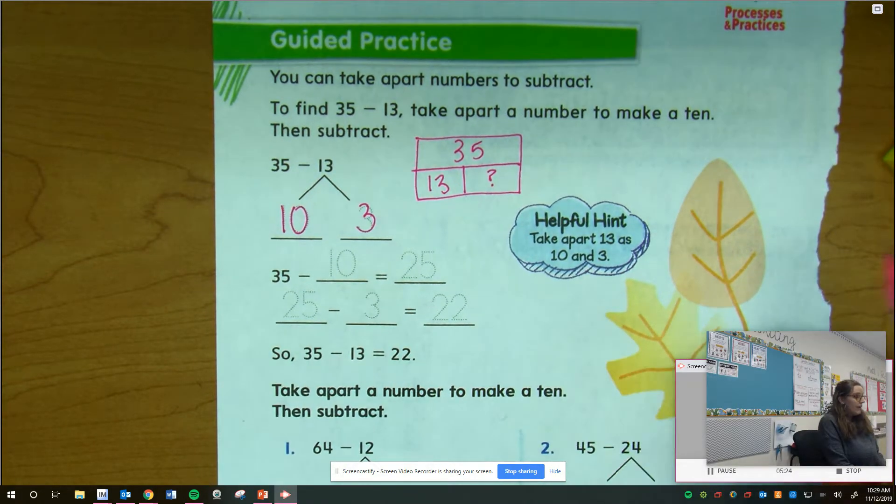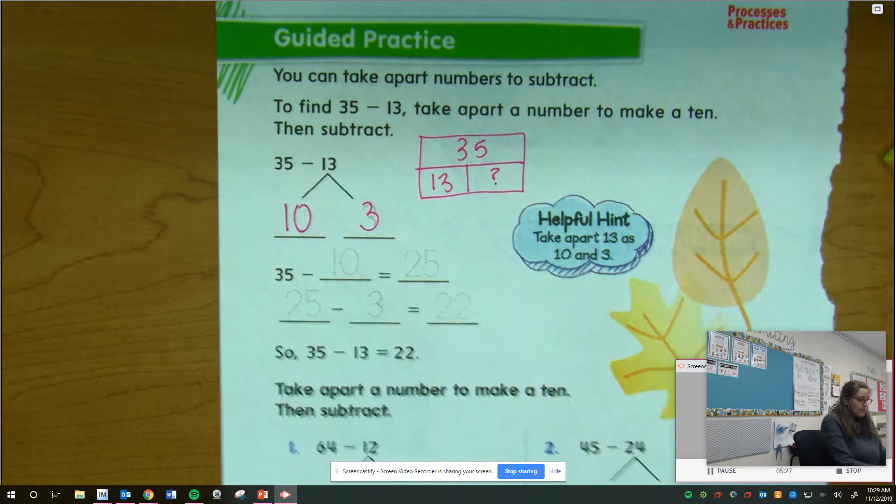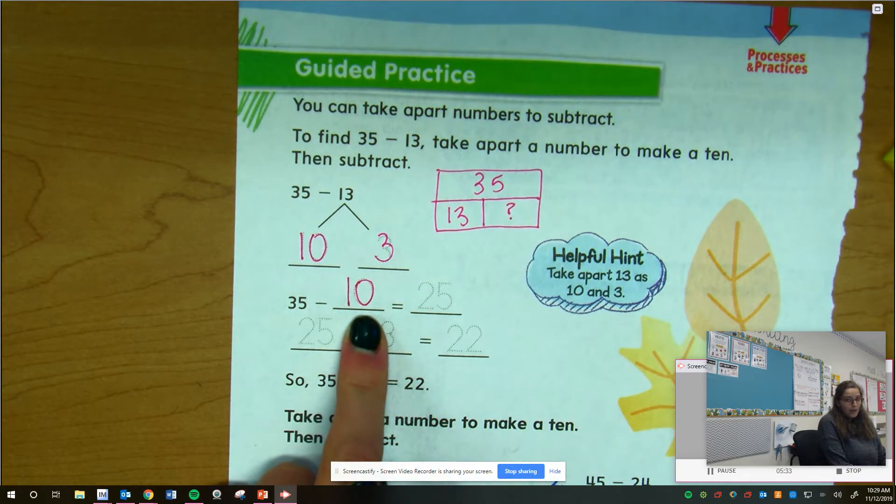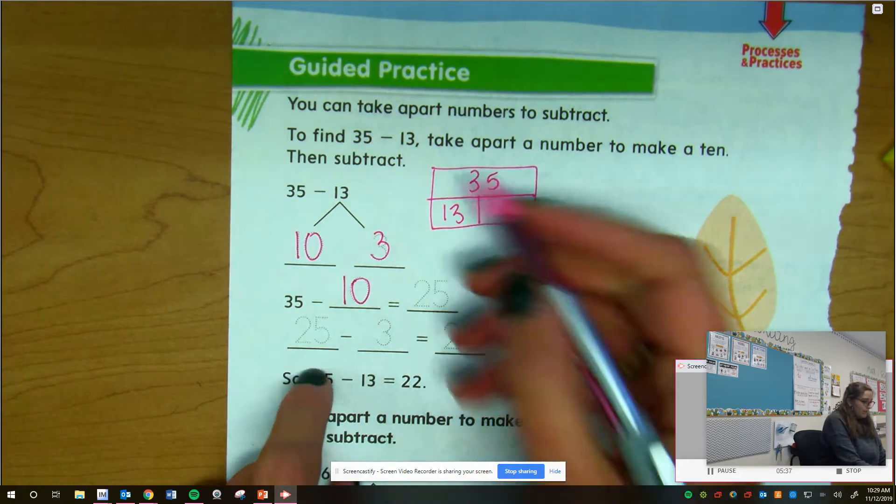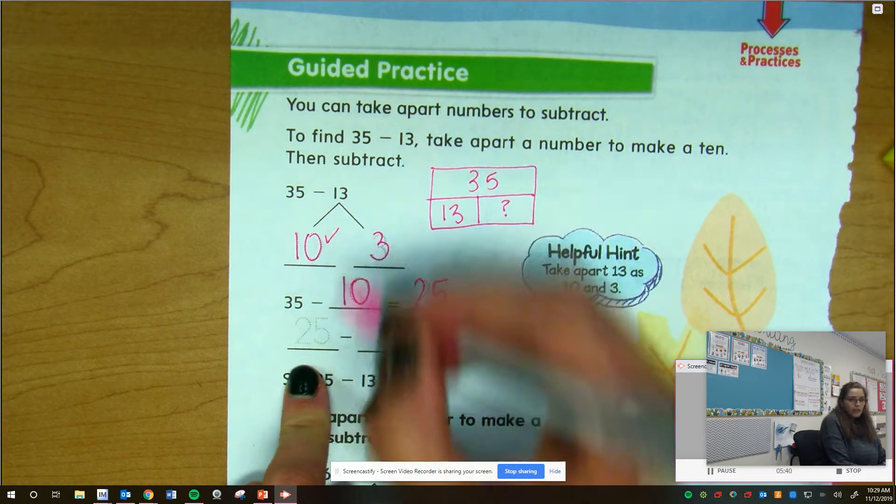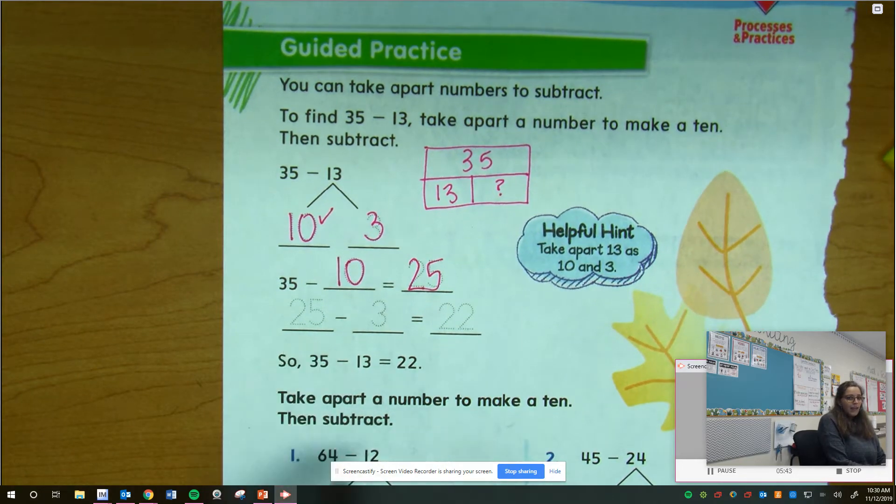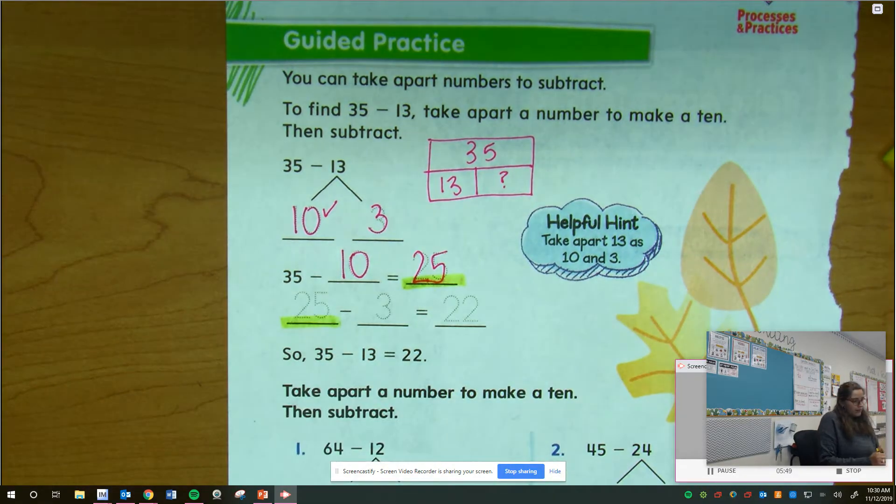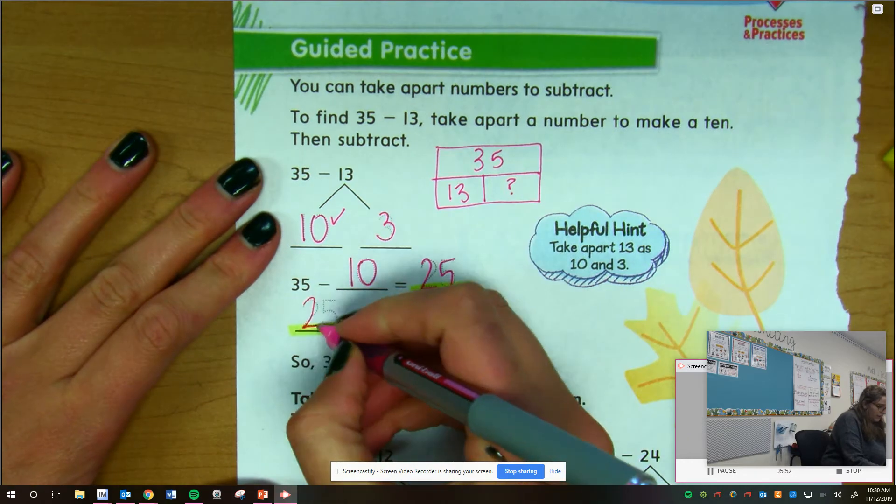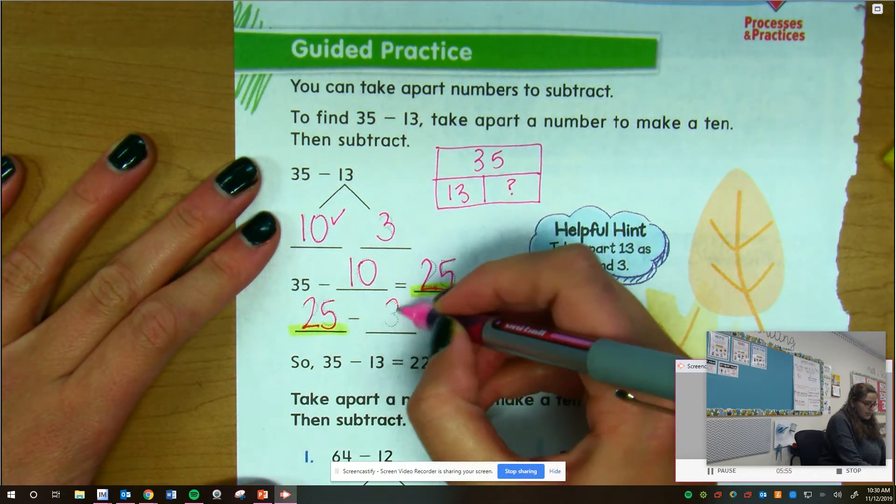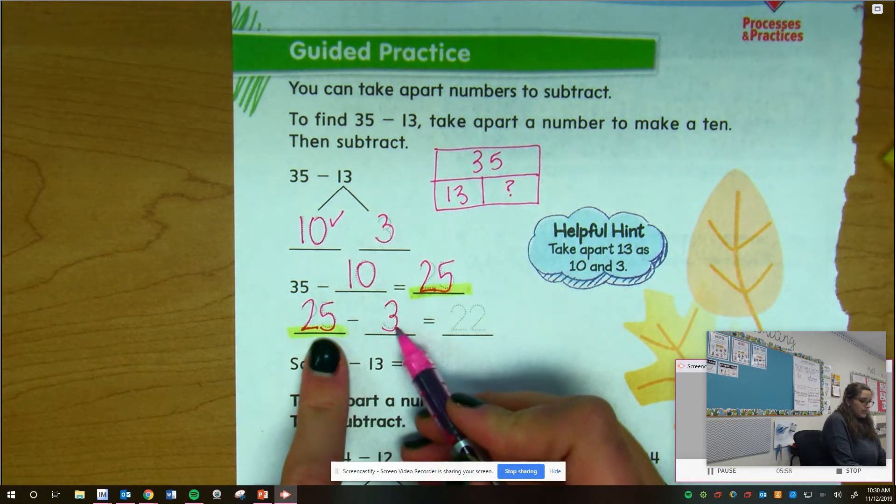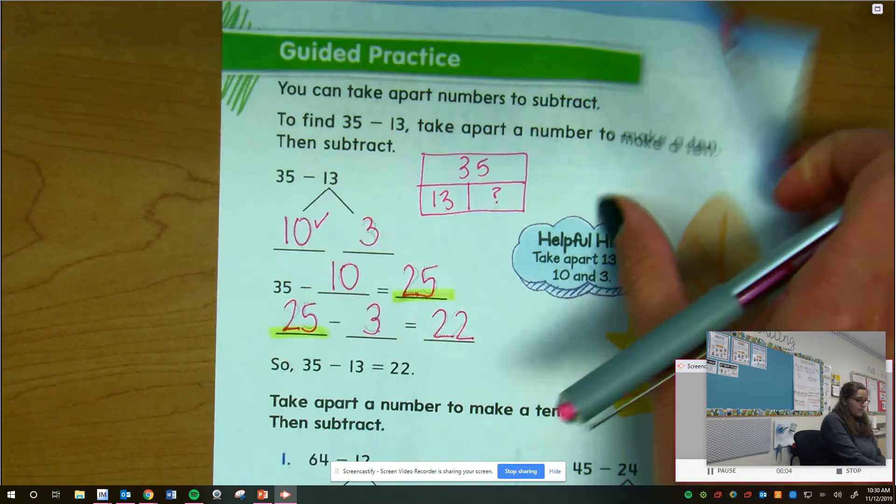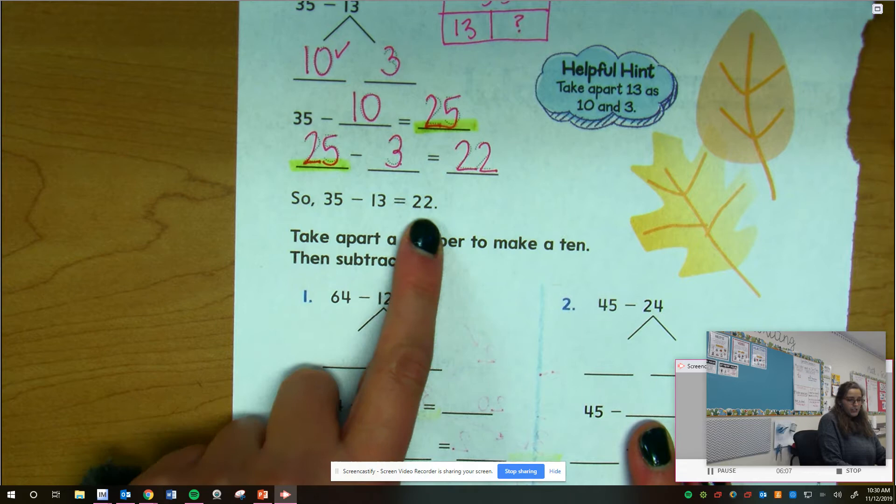We're going to take away the ten first. I'm going to take away that one ten that I broke 13 up into. Remember, whenever I subtract the ten, my ones place doesn't change, so I go 35, 25. Put a little check mark right there because you subtracted the tens. Then we're going to start with that same number. Whatever number I got here is what I start with here, so I'm starting at 25. Now I'm going to subtract the ones from 13, so that's minus 3. I know that 5 minus 3 is 2, so 25 minus 3 is 22. So 35 minus 13 is 22.